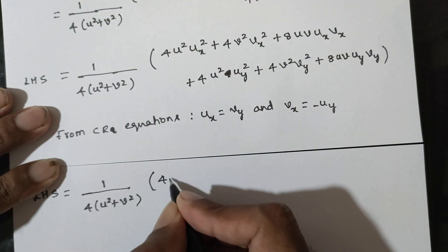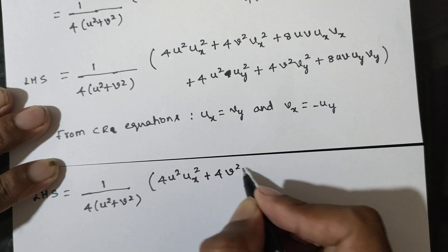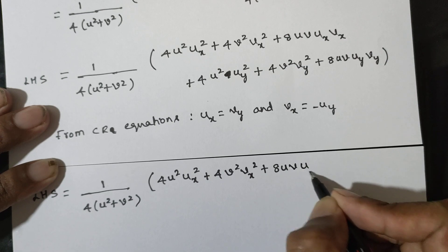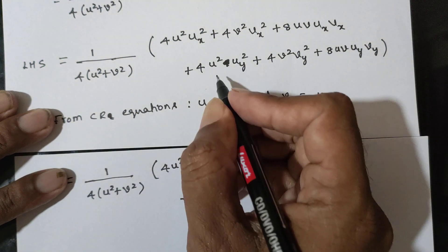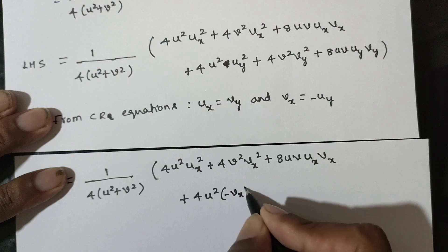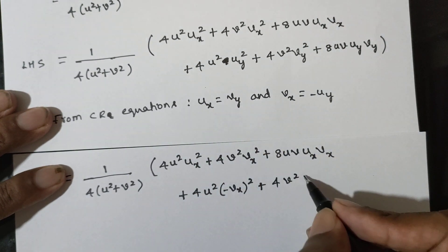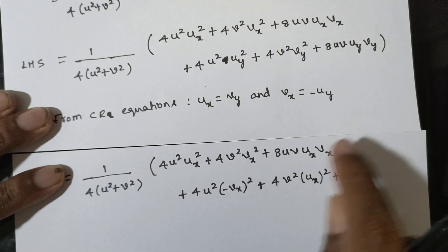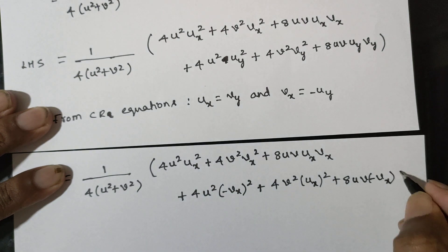Substituting: 4u square times ux square, plus 4v square times vx square, plus 8uv times ux vx, plus 4u square times uy squared — where uy equals negative vx — plus 4v square times vy squared — where vy equals ux — plus 8uv times uy times vx.